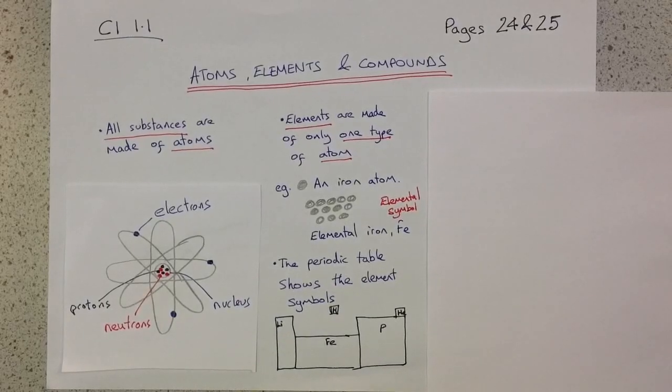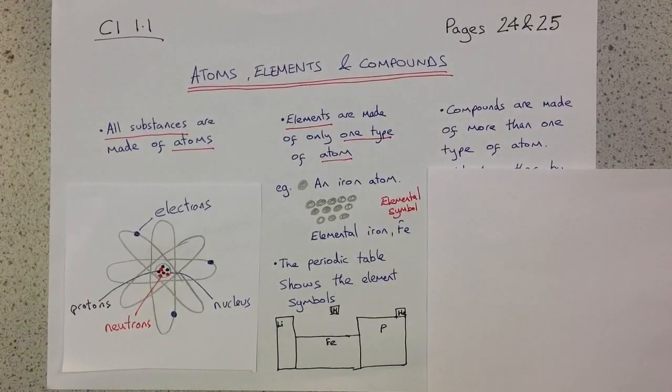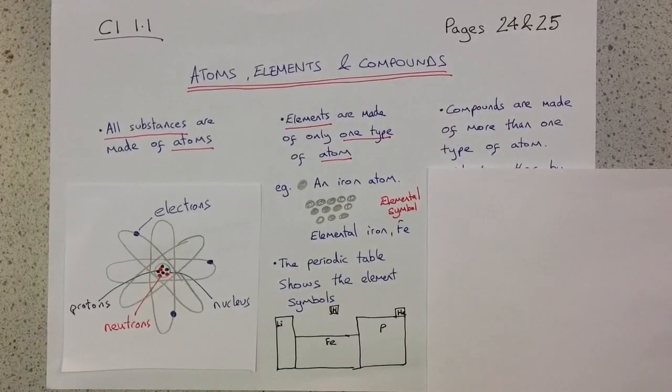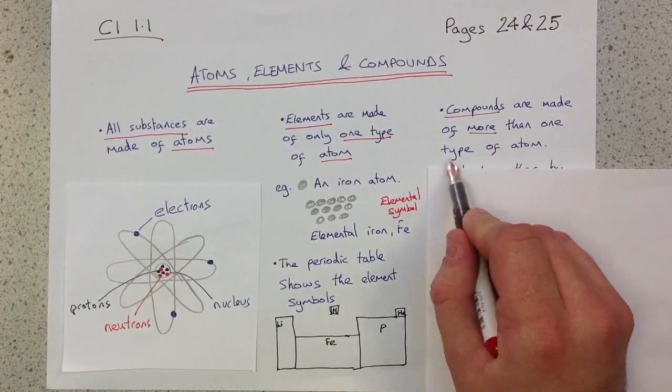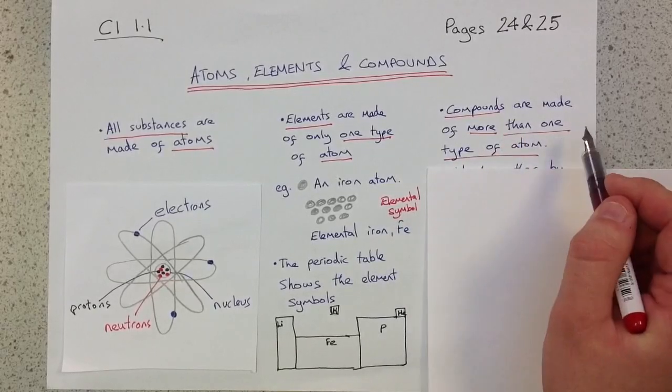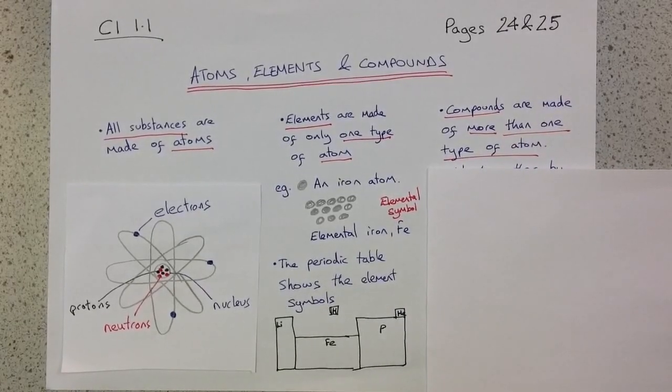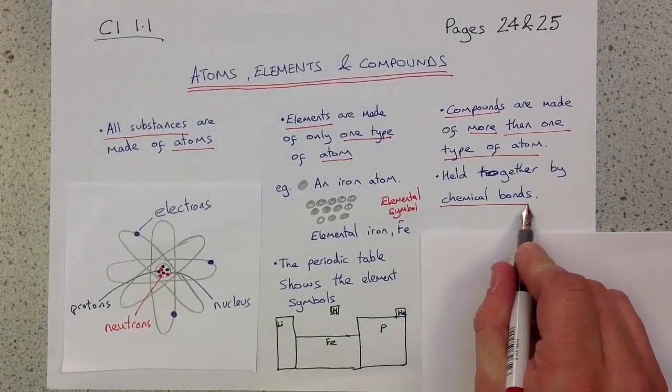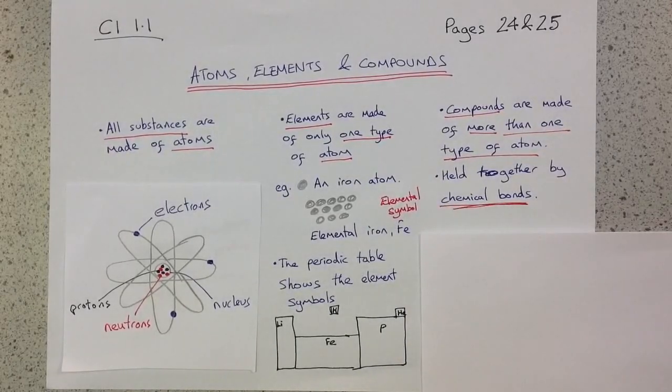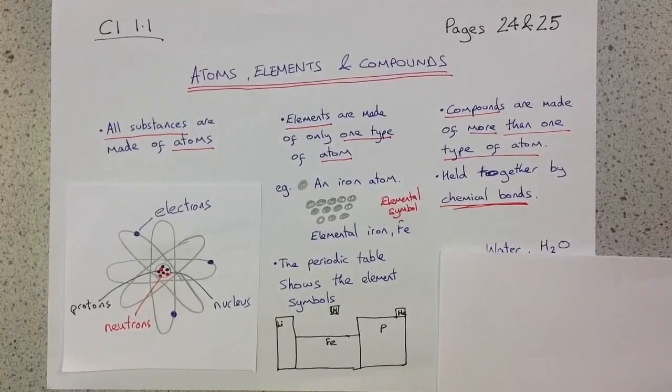Finally, compounds. Compounds are made of more than one type of atom. And they are held together by chemical bonds. They are chemically bonded to one another.